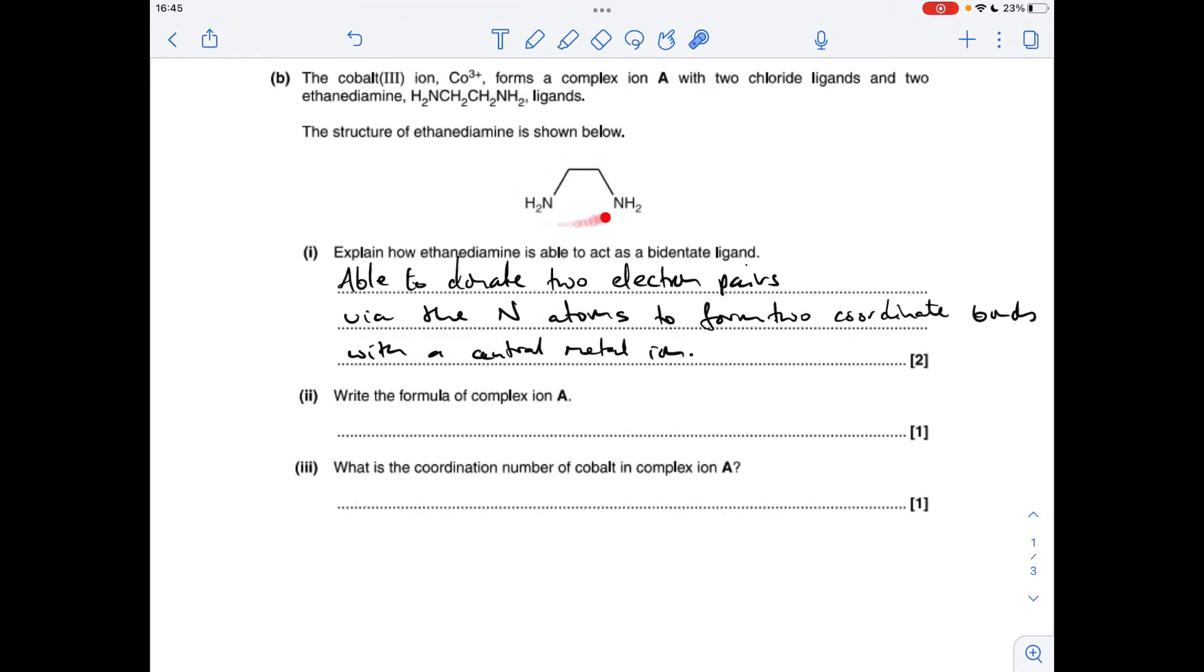Part B now: explain how this is able to act as a bidentate ligand. It's able to donate two electron pairs via the nitrogens to form two coordinate bonds with a central metal ion.